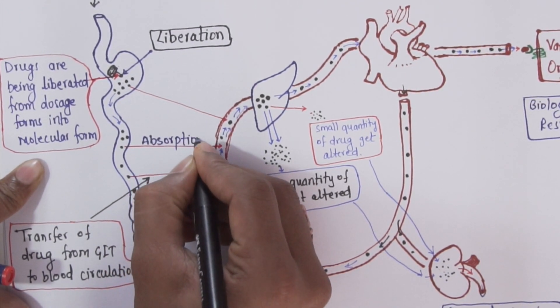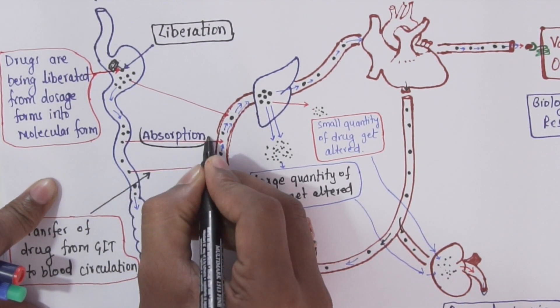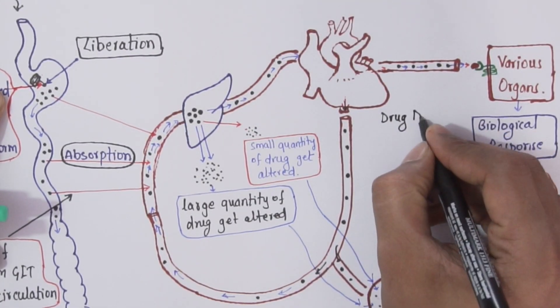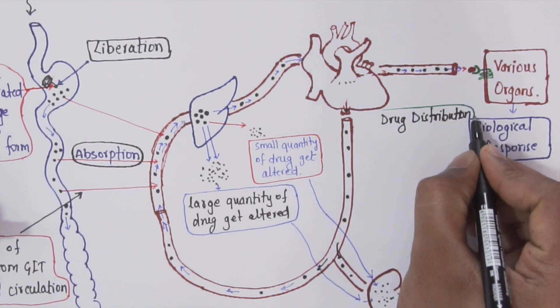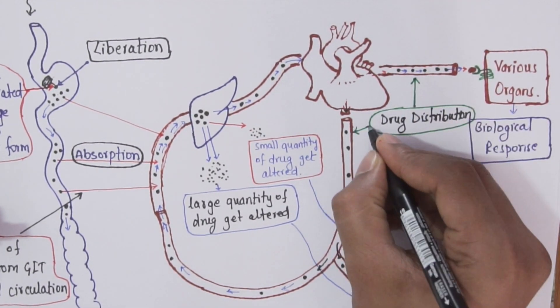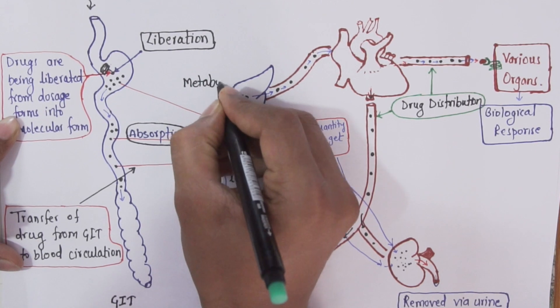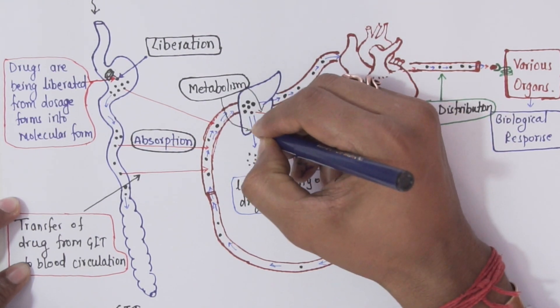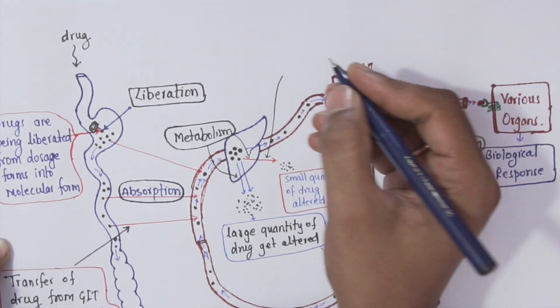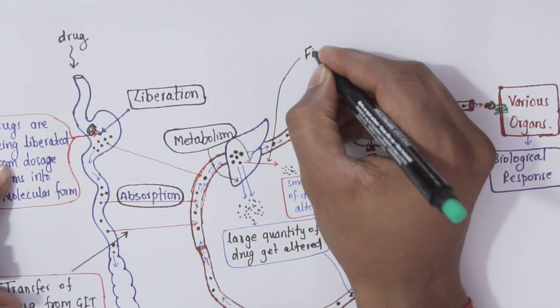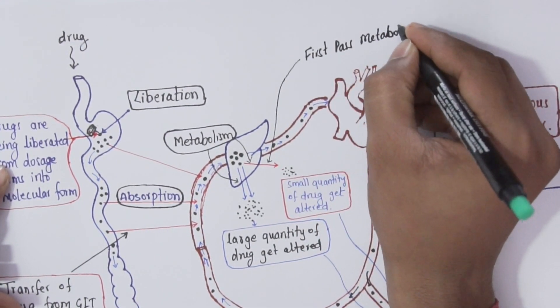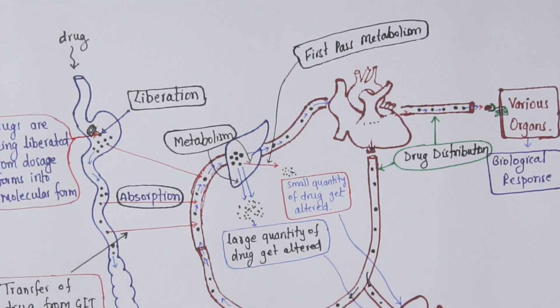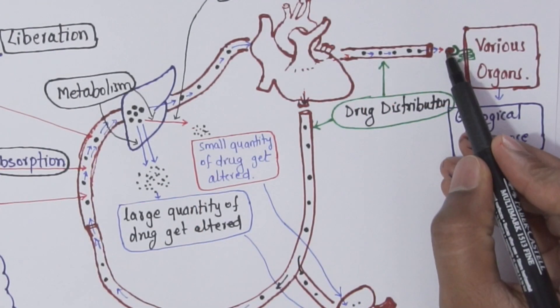Now this step is called absorption, where drug moves from GIT to circulation. This step is called drug distribution, where drugs are distributed to various organs based upon the blood supply to that organ. This step is called metabolism, where the drug gets altered. When the drug passes to the liver for the first time, some small quantity of drugs get altered—that is called metabolism.